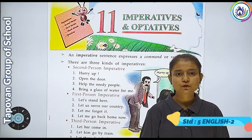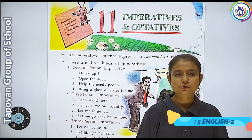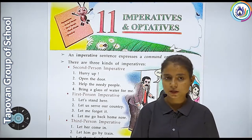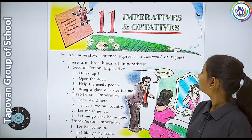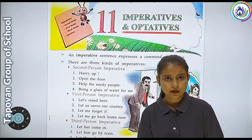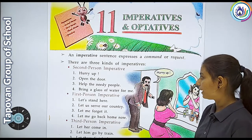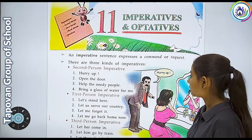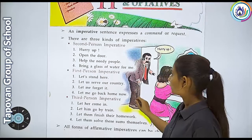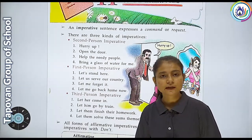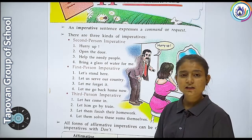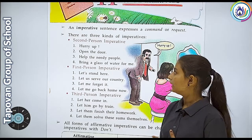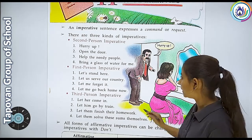Hello students, welcome back. Phone Group of School, myself Wrinkle Sonda. Today we will learn about Standard 5, Subject English 2, Chapter Number 11 - Imperative and Optative sentences. Aaj hum kya sikhne wale hain - imperative and optative sentence ke baare mein learn karne wale hain. So let's start our chapter. Imperative sentence, interrogative sentence, negative sentence - bahut saare sentence hote hain, unhi mein se ek hai imperative sentence.